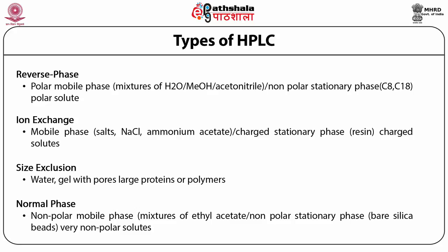In ion exchange chromatography, the stationary phase has a resin — either cationic or anionic — based upon which the mobile phase uses aqueous solvents with different ionic compositions. Next comes size exclusion, which classically comes under low pressure liquid chromatography, where gel silica with larger pores is used for separation of larger proteins and polymers. These columns are used for isolation of antibodies and purification of immunoglobulins.